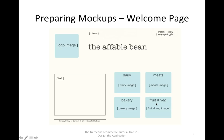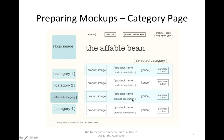If the customer clicks on fruit and vegetable, we will navigate to the category page and display those products. A text area will introduce the Affordable Bean store business. The next web page is the category page. The category page provides a list of all products within the selected category. For example, if the customer selects the meat category, then all meat products will be listed.